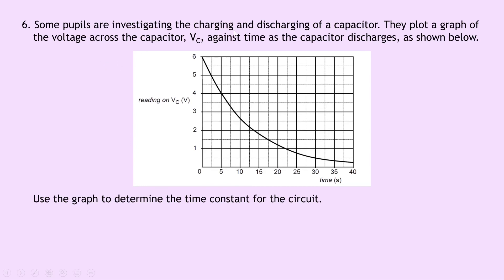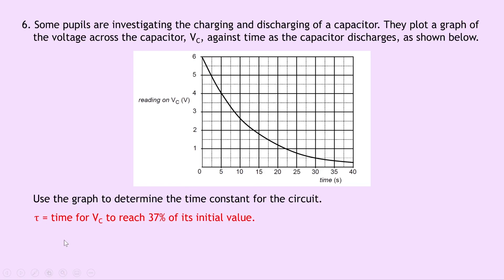Question 6: pupils plot a graph of VC in volts against time in seconds as a capacitor discharges. We need to use the graph to determine the time constant. Since the capacitor is discharging, the time constant is the time for VC to reach 37% of its initial value of 6 V. 37% of 6 = 0.37 × 6 = 2.2 V. Drawing a line from 2.2 V across to the curve and down to the time axis gives approximately 12.5 seconds as the time constant.